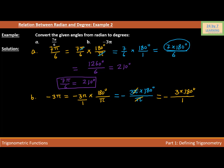Multiplying negative 3 times 180, we get negative 540 degrees over 1. Anything over 1 is the number itself, so the answer is negative 540 degrees. Therefore, negative 3π in terms of degrees is negative 540 degrees. This is how we convert radians into degrees.